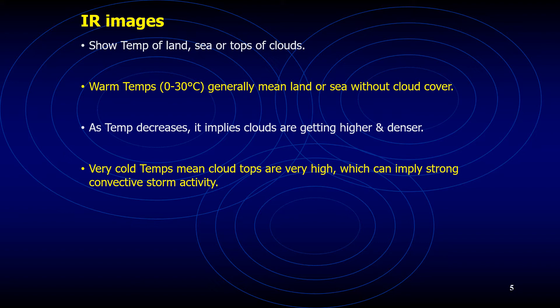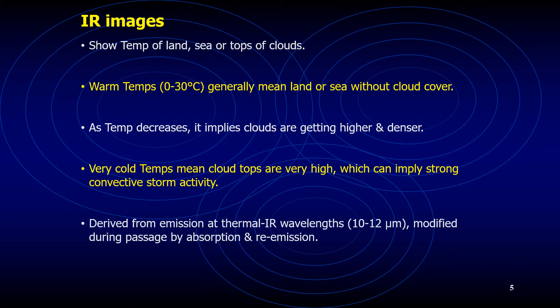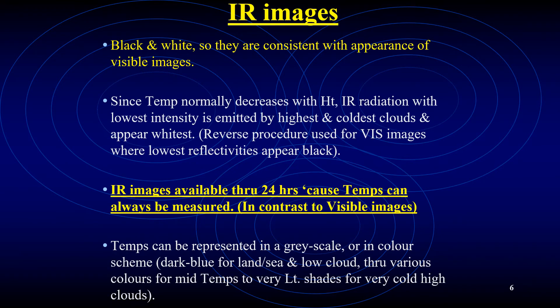When infrared images are presented in black and white, they are consistent with visible images in that clouds appear in whiter shades against the darker background of the earth. Clouds are usually colder than the earth's surface, so the temperature of the clouds also indicates how tall they are, since temperature is inversely proportional to height in the atmosphere. Warm clouds show up in gray, cool clouds appear whiter, and very cold clouds appear bright white, as I'll show you in some of the images.